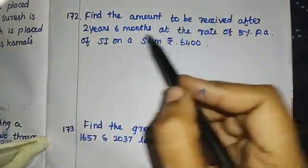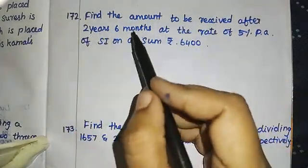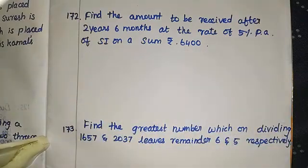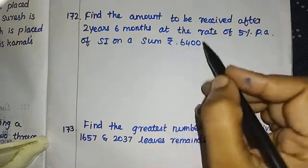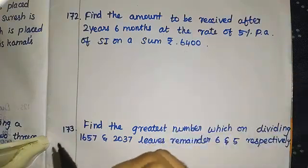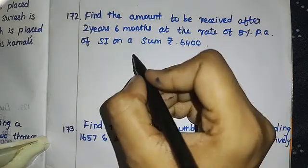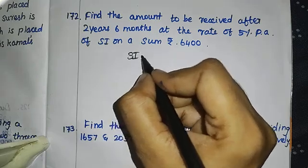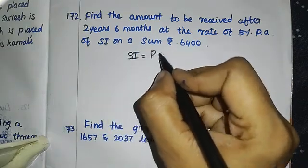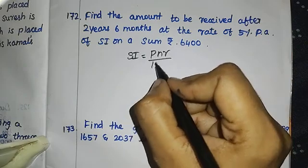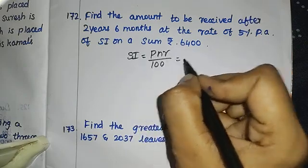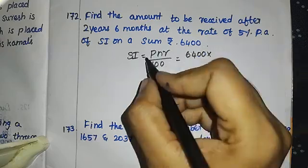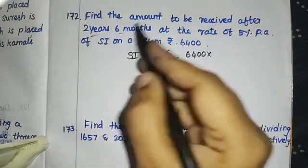Find the amount to be received after two years six months at the rate of five percent per annum of simple interest on a sum of rupees 6400. To find the amount, first we need to find the simple interest. The formula for simple interest is P×N×R divided by 100. The principal amount is 6400.